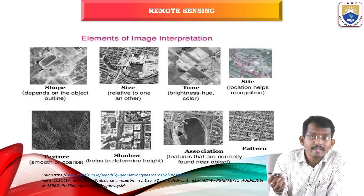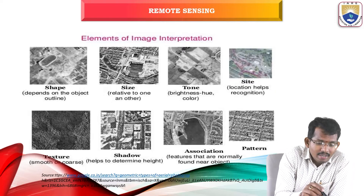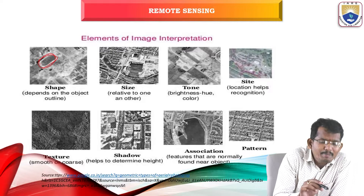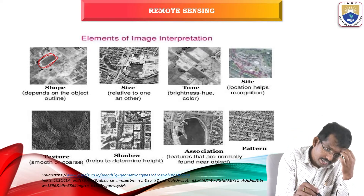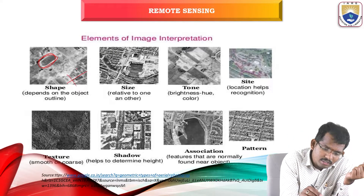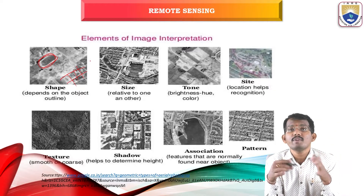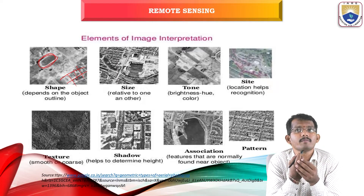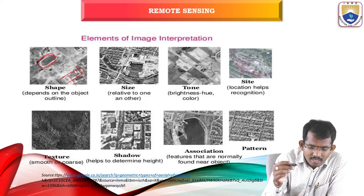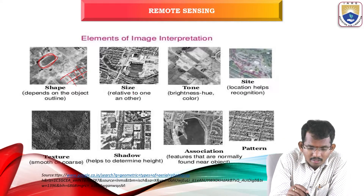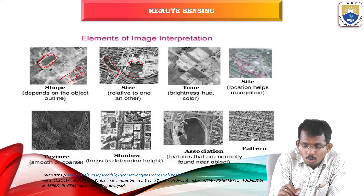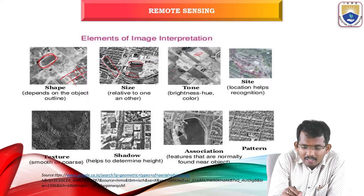You can see the elements of visual image interpretation technique. Shape depends upon the object outline — you can see a football ground or some pitch, or some agricultural lands in square blocks. By this image, you can say that there is an agricultural land or a pitch or ground in a particular region. You can see the size — relative to one another. You can also see tone — light color and dark color.